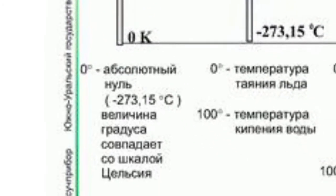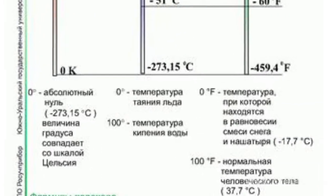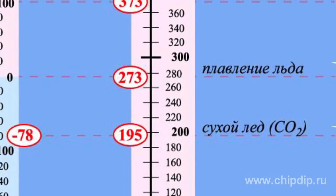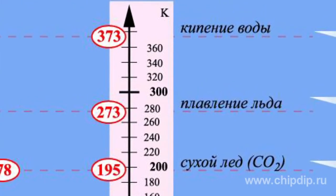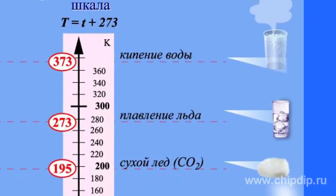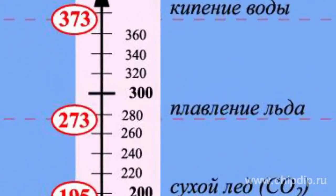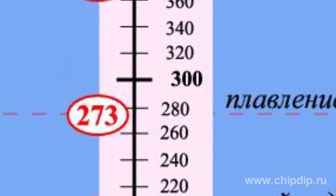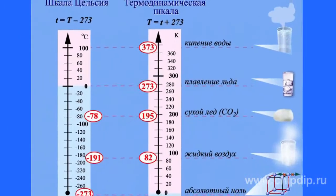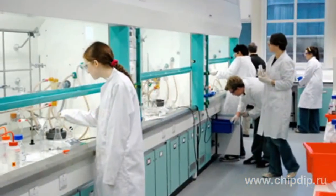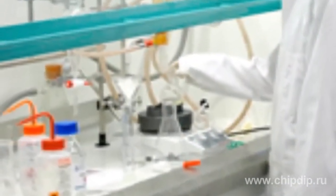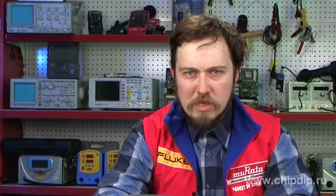In thermodynamics, the Kelvin scale is used, in which the temperature is measured starting from absolute zero — the state corresponding to the lowest theoretically possible internal energy of the body. The second fixed point is the triple point of water, the state when solid ice, liquid water, and water vapor can exist in equilibrium, and the temperature is equal to 273.15 K precisely. This scale is used in research and is rarely used in practice.